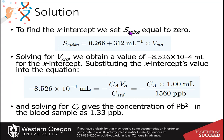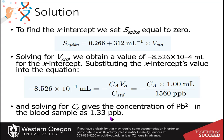Setting the equation equal to 0 and solving for x gives us the x-intercept. We know that value is equivalent to the negative concentration of the analyte times the volume of the analyte over the concentration of the standard. From the problem, the volume of the analyte is 1 mL and the initial concentration of the standard is 1560 parts per billion. Solving for CA gives a concentration of 1.33 parts per billion. You should get the same analyte concentration regardless of which method you use to calculate it.